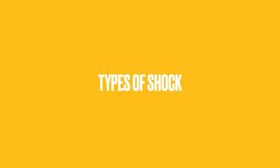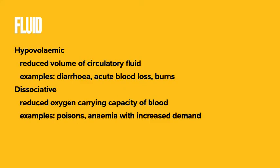There are quite a few different types of shock. The first type is hypovolemic shock, which happens when you have a reduced volume of circulatory fluid. This results in a reduced stroke volume, which will in turn result in a reduced cardiac output. This can be because of diarrhea where you're losing lots of fluid, an acute blood loss or active bleed, or something like burns where you're losing fluid to third spacing.